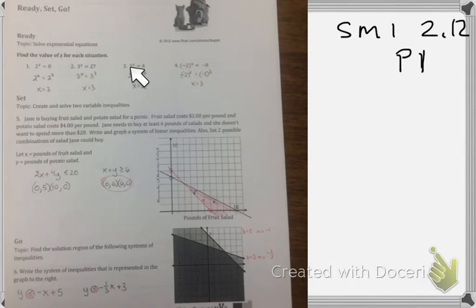2 to the x. Well, the easiest way to solve that would be if I could make 4 as 2 to some power. So 2 to the second power is 4. Well, if 2 to the x equals 2 to the second, that must mean that x equals 2.